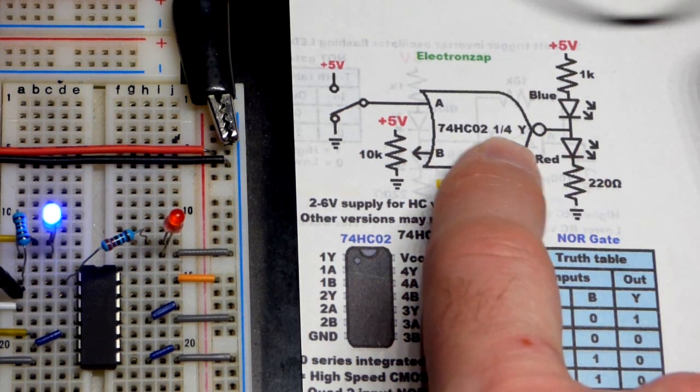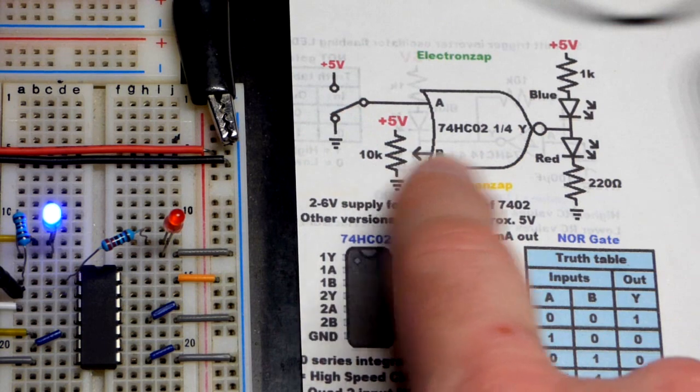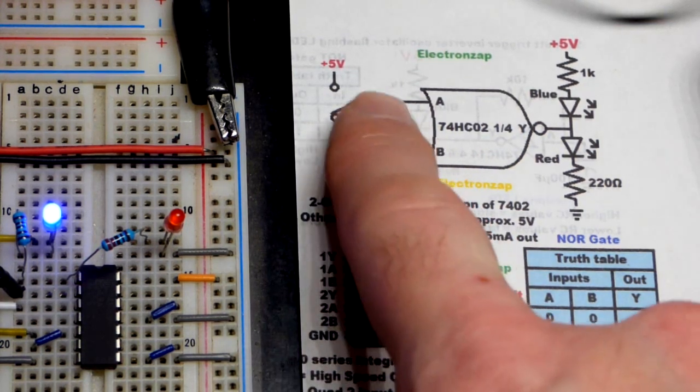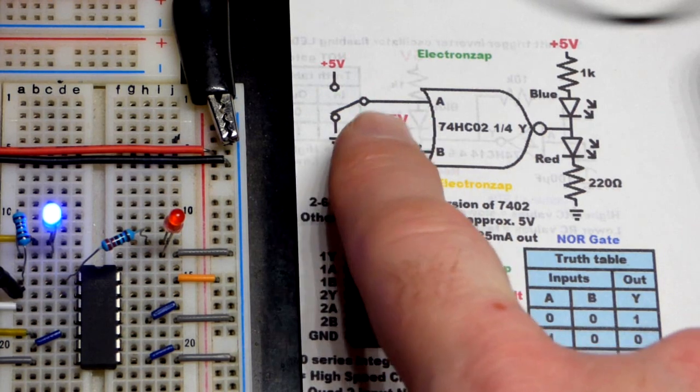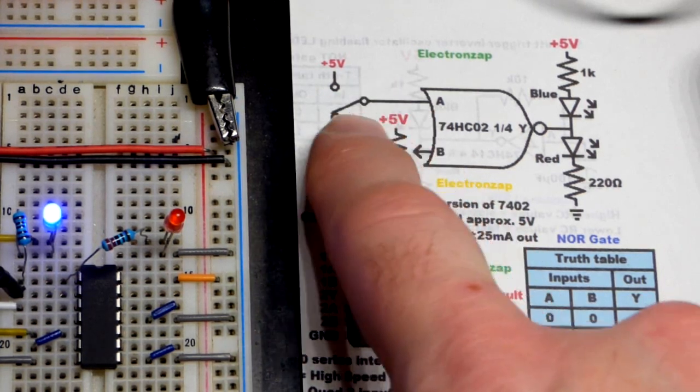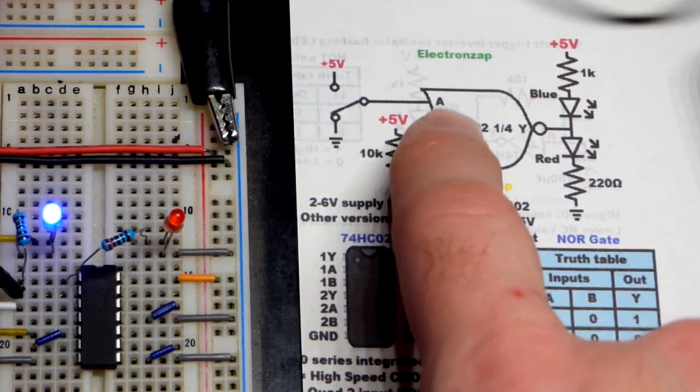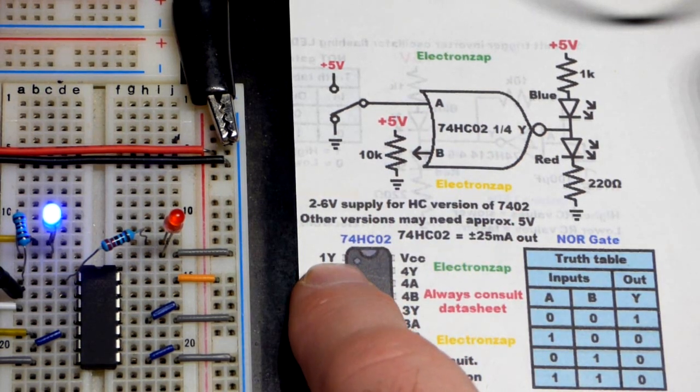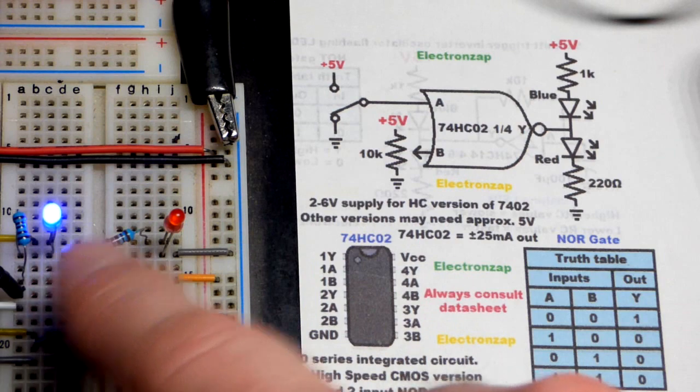We're only using one out of four of them. You can see our two inputs - I had a trim pot going to 1B and a jumper going back and forth. You could also use a switch - a single pole double throw switch. That's going to A right there, and our output Y was the top, as we could see there.